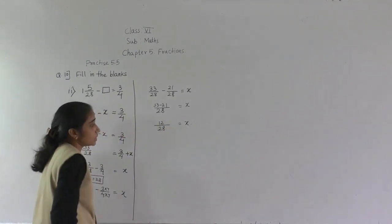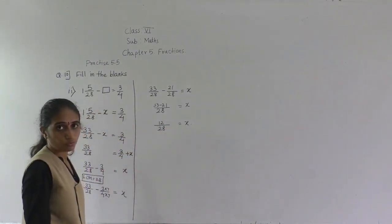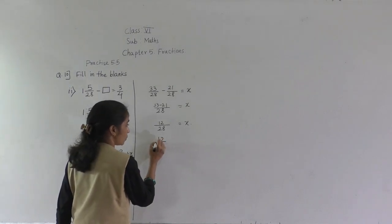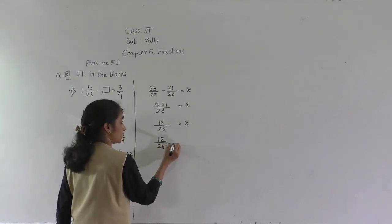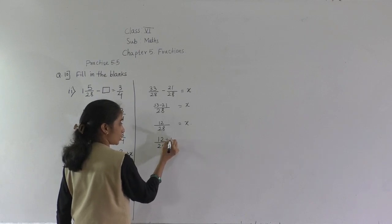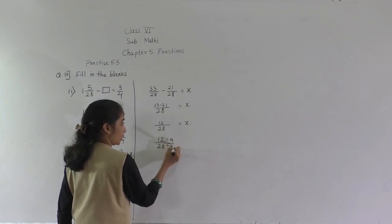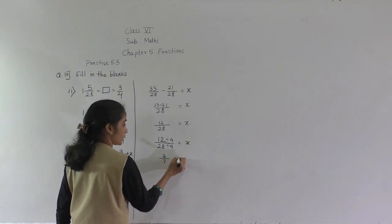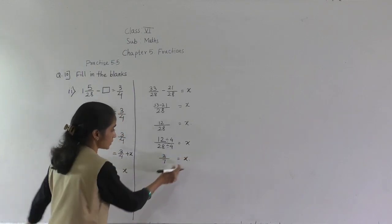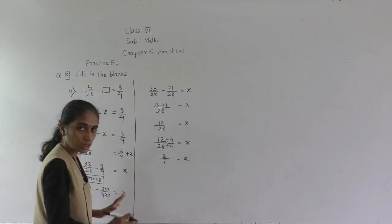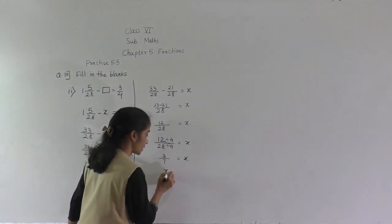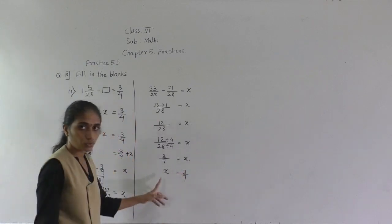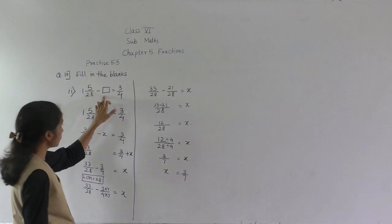Now both numbers are divisible by 4. 4 threes are 12, 4 sevens are 28. So in lowest terms, 12 upon 28 simplifies to 3 upon 7. So x is equal to 3 upon 7. That means this blank box is equal to 3 upon 7.